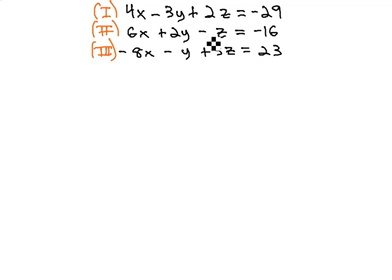You might notice the z's are pretty easy to get opposites in front of when we have a negative z. Multiplying by 2, it'll eliminate with the first equation, and if we multiply it by 3, it'll eliminate with the third equation. So, let's go with that. Let's eliminate the z's twice, and we can start doing that with equations 1 and 2.